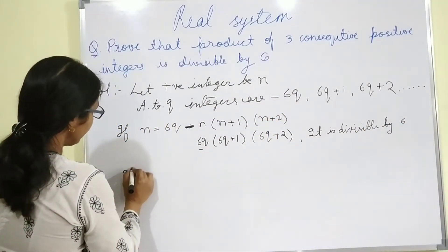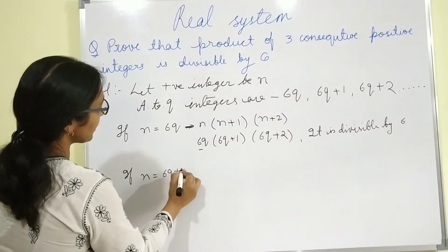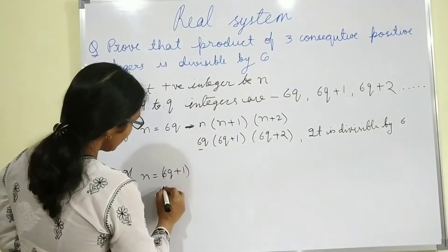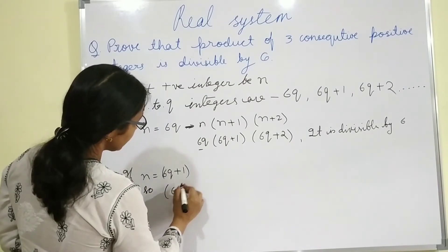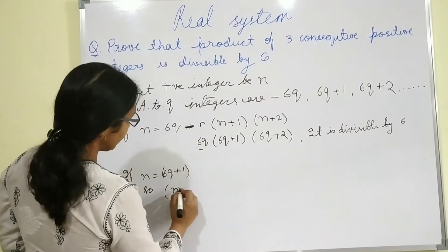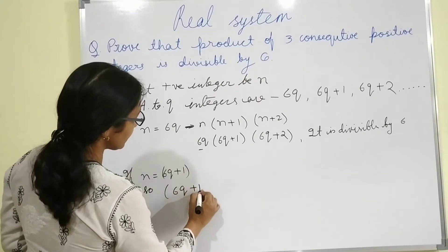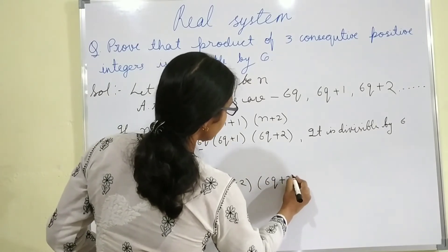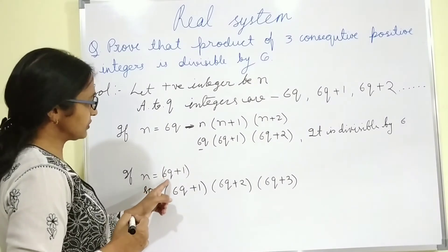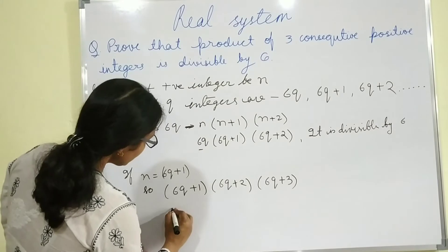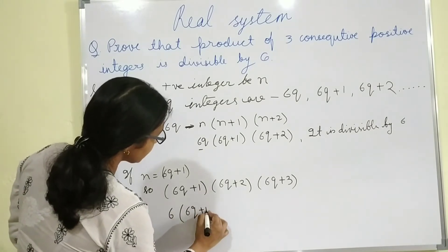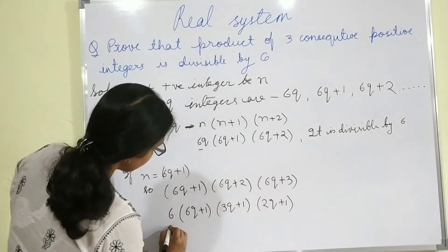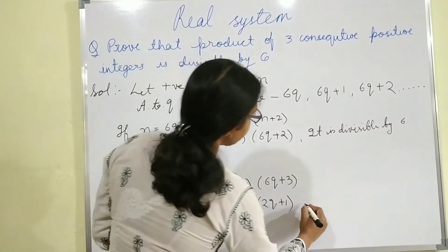Now if N equals to 6Q plus 1, we have to multiply 3 consecutive multiples. So N equals to 6Q plus 1, N plus 1 equals to 6Q plus 2, N plus 2 equals to 6Q plus 3. The product becomes 6Q plus 1, 3Q plus 1 and 2Q plus 1. 6 is here, so again it is divisible by 6.